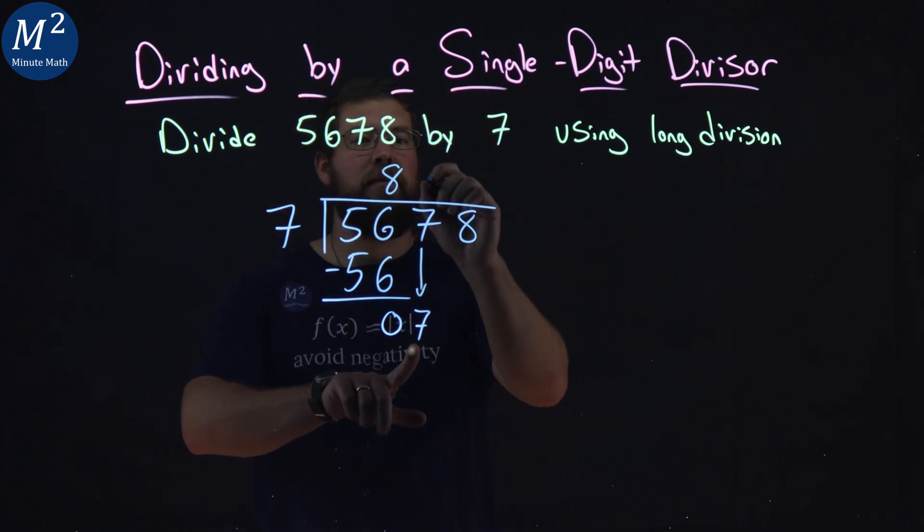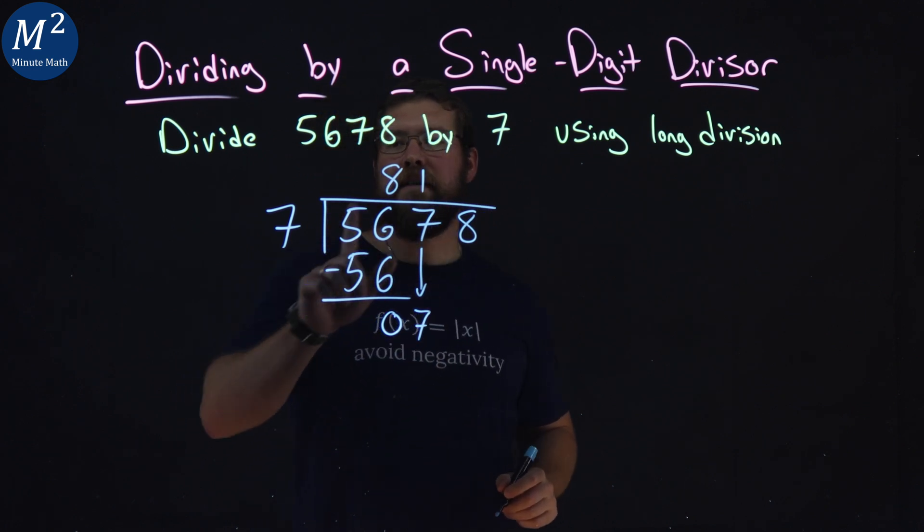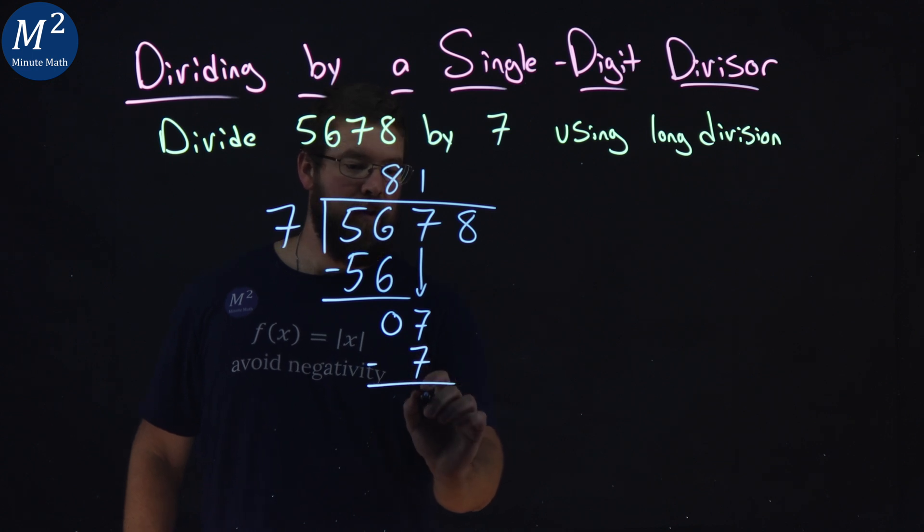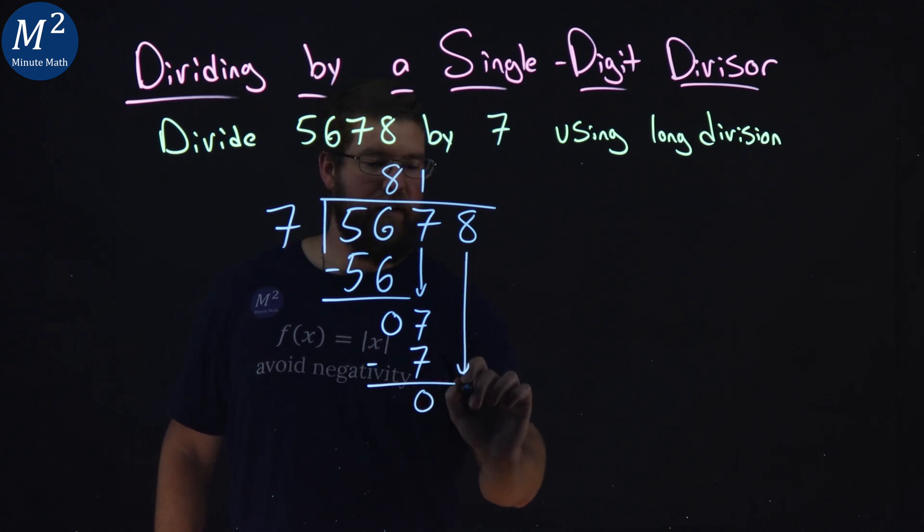7 goes into 7 one time. 1 times 7 is 7. Subtract those two right here. We get a 0. We bring down the 8.